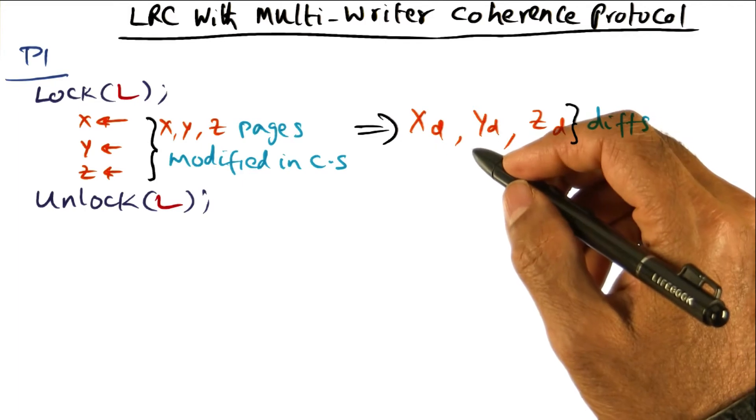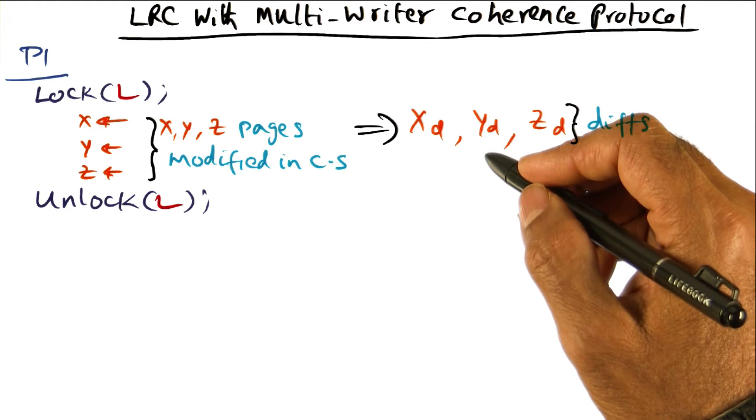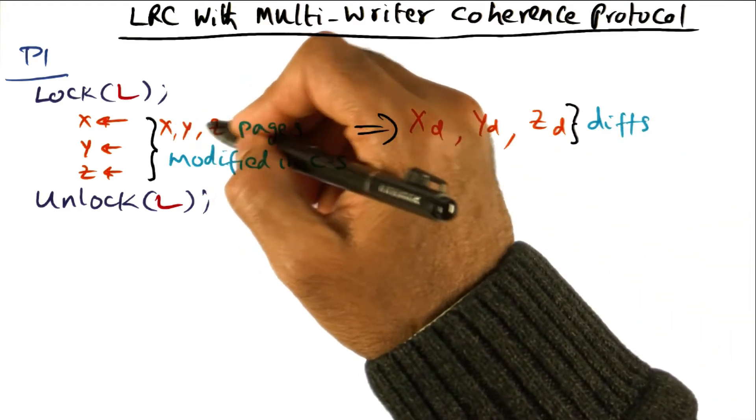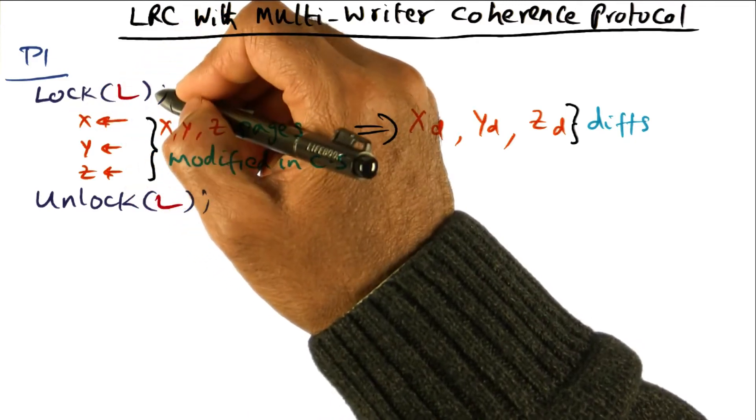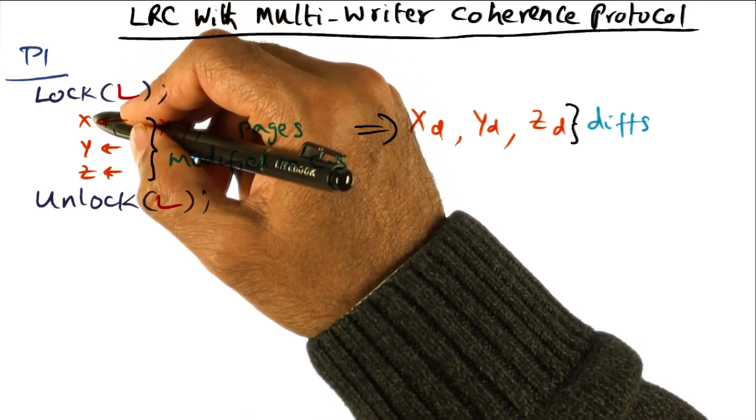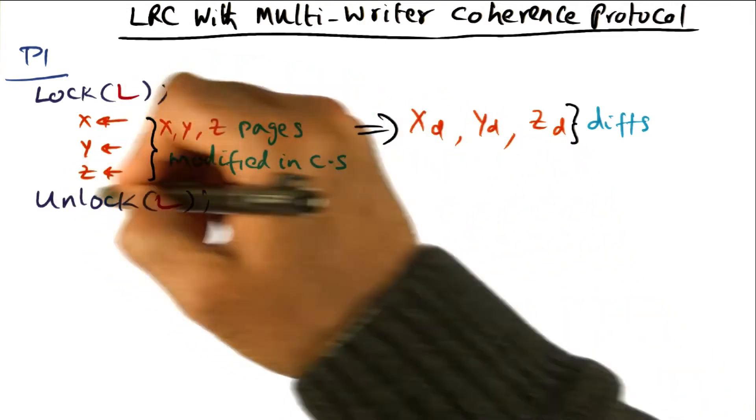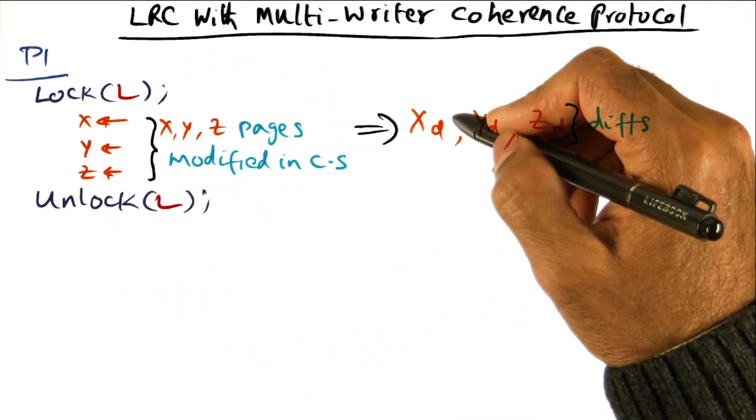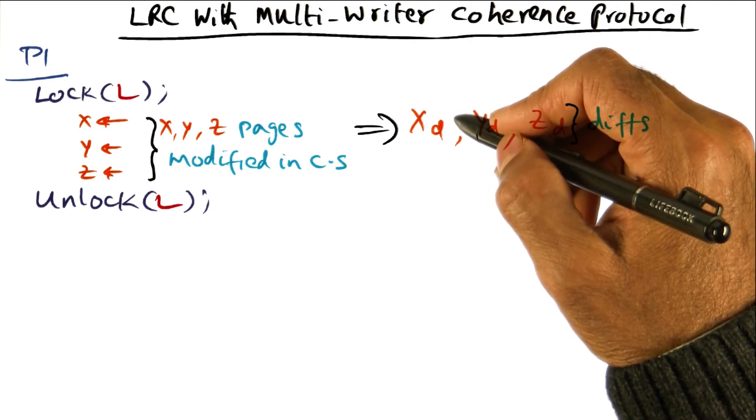What we're going to do is create a diff of the changes that were made to the pages X, Y, and Z in this critical section. We know at the beginning of this critical section what the contents of the pages X, Y, and Z are. At the end of this critical section, we're going to find out what is the difference that has been made, or what are the changes that have been made.